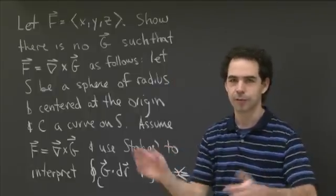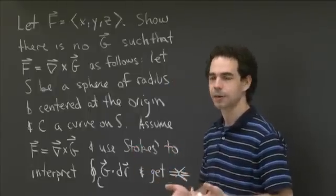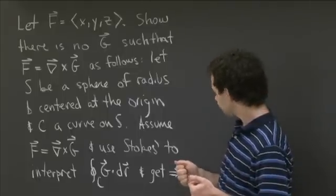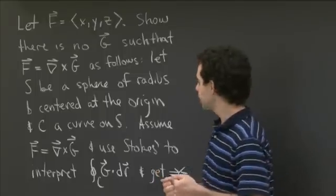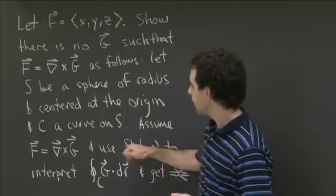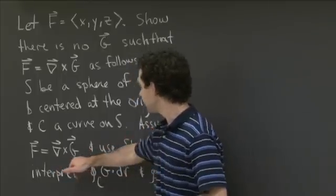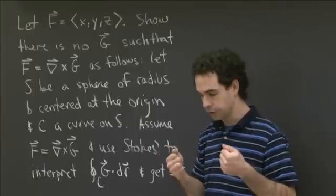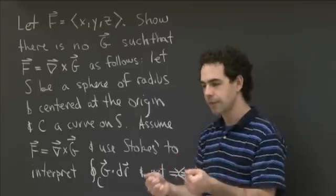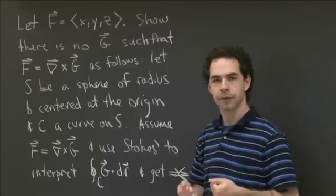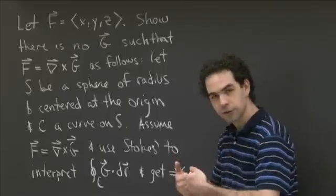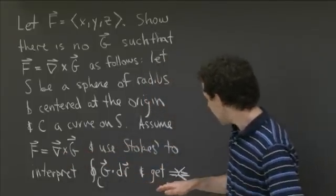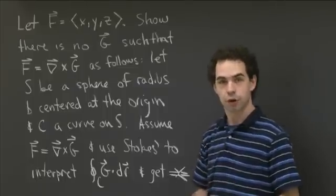Rather than just saying that and letting you run off, I have a suggestion for an interesting way you could go about this. This interesting way is going to use Stokes' theorem. What I'd like you to do is a proof by contradiction. You're going to assume that f is a curl — that there is some g such that f equals curl g — and then use that to get a ridiculous conclusion. You're going to start with that premise and end up with a contradiction.